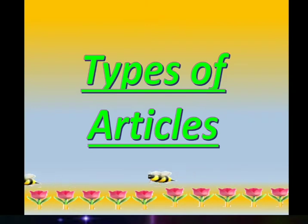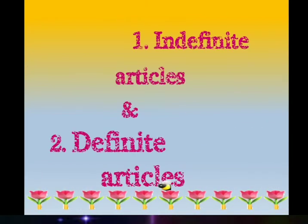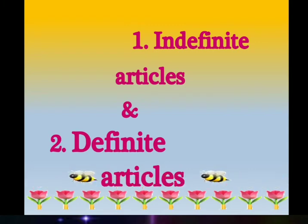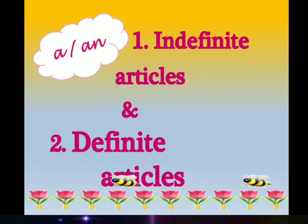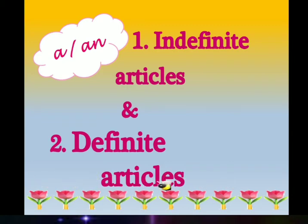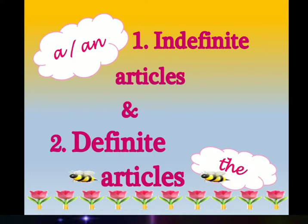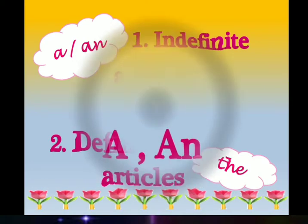Let's understand about the types of articles. In English, there are two types of articles. First is indefinite articles and second is definite article. A and AN are the two articles coming under the first type, that is indefinite article, and THE is the definite article.